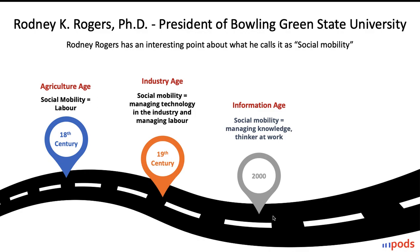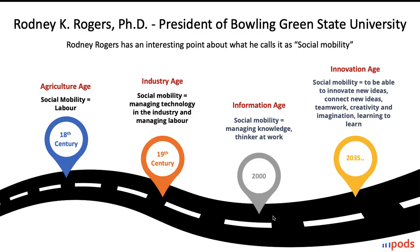Progressively we landed in the information age, where social mobility was about managing knowledge — think of the IT industry or your own institution. We are thinkers, and the evolution of social mobility happened along with the overall progress made by human beings. Now, after a few years, we expect it will be an age of innovation, where social mobility will be about being able to innovate new ideas, connect new ideas, be very creative, and probably all that students will have to do is learn how to learn.